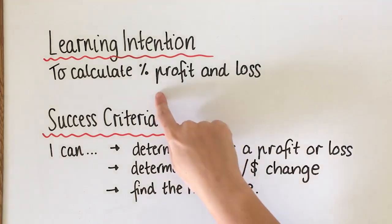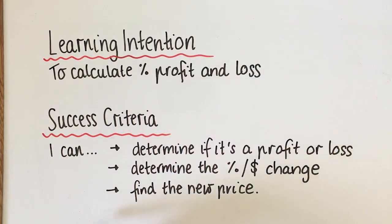The learning intention is to calculate percentage profit and loss. You need to be able to determine if it is a profit or a loss, so has it gone up or down, determine the percentage or the dollar amount change, and some questions will also ask you to determine what the new price is or what the end result is.